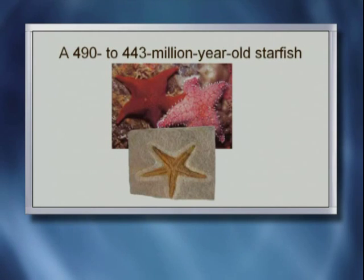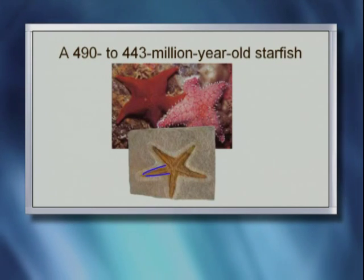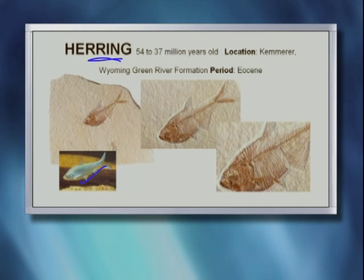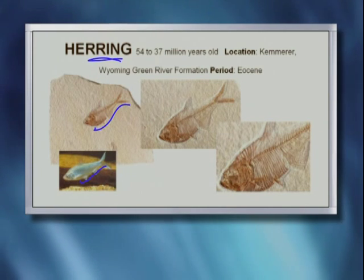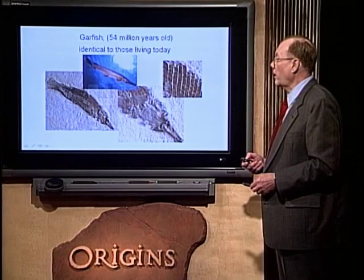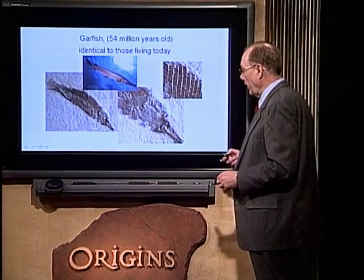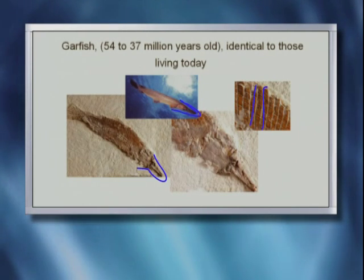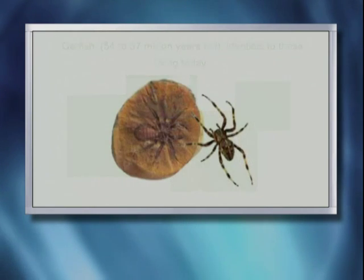Starfish — this is dated at 490 million years old. And again, what we see is, as far as we can tell, morphologically identical. Herring — probably 80% of all fossils are of marine creatures. The herring, compare it with a modern day example, and you can see the position is even the same. When you evaluate the internal structure, you can see some of the examples of the bone structure — again, they are identical. And a garfish, very distinct fish. You can tell it pretty quickly by the snout area. You can see the same thing in the fossil record, and the scales are very detailed and identical to a living garfish.